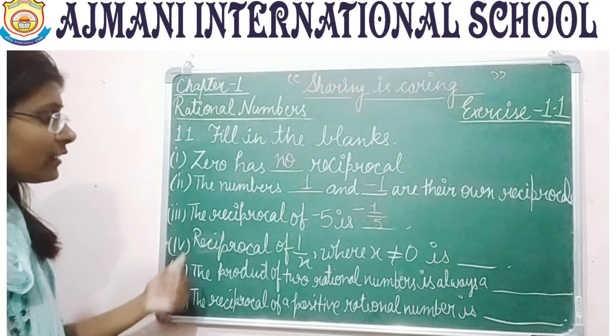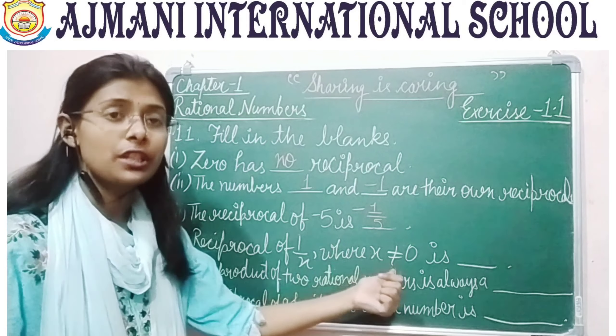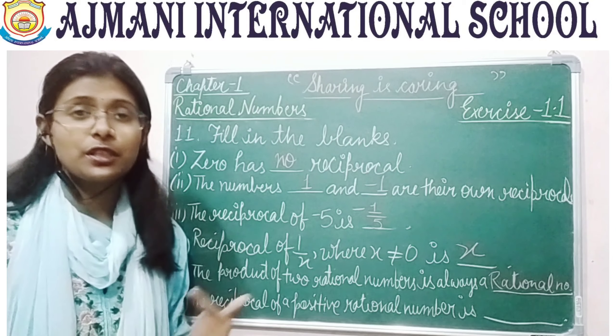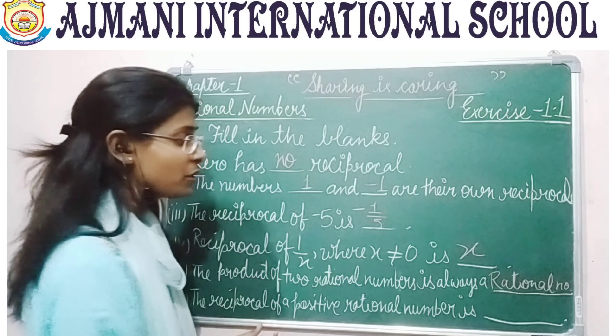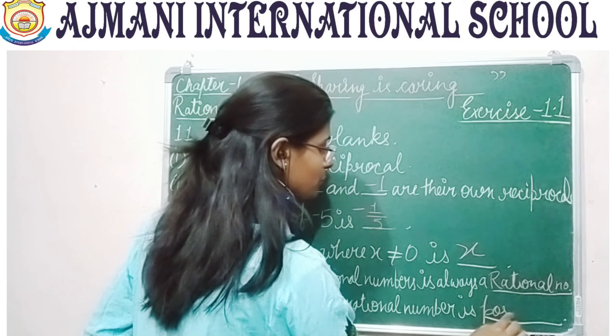Fourth: the reciprocal of 1 by x (where x is not equal to 0) is x. We specify x is not equal to 0 because 0 cannot be the denominator. Fifth: the product of two rational numbers is always a rational number — this is called the closure property. Sixth: the reciprocal of a positive rational number is positive itself.